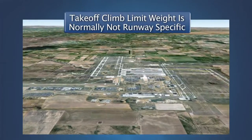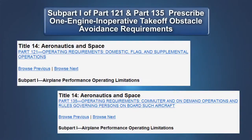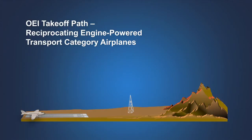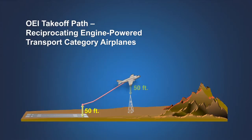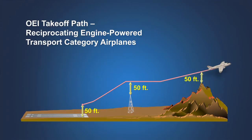The requirements for takeoff obstacle clearance may be found in Subpart I of Part 121 and Subpart I of Part 135 of the Code of Federal Regulations. Looking back at the operating rules for an airplane like the DC-6 or Lockheed Constellation, following an engine failure on takeoff at V1 speed, the airplane was required to clear obstacles by 50 feet at any point until the airplane's actual height above the runway was 1,000 feet. In the 1950s, it was recognized that 50 feet of obstacle clearance after an engine failure was not sufficient to support the new generation of jetliners.